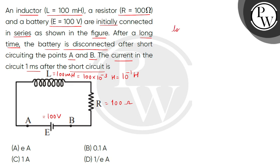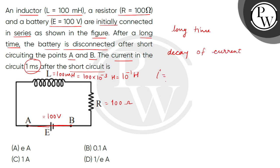After a long time, the battery is disconnected and points A and B are short-circuited — meaning directly joined. After short-circuiting, we need to find the current value 1 millisecond after the short circuit. When we remove the battery, the current will decay, which is also called the decay of current in an RL circuit.